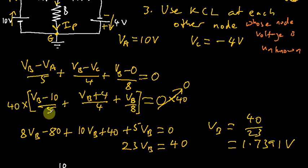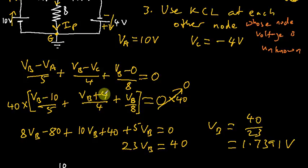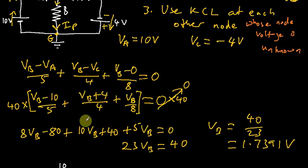On the left-hand side, 5 goes into 40 giving us 8, so we have 8VB minus 8 times 10, which is minus 80. Then 4 goes into 40 ten times, so 10 times VB gives us 10VB plus 4 times 10 which is 40. And 8 goes into 40 five times, so we're left with 5VB. That's equal to 0. So that gives us 8 plus 10 plus 5 — that is 23VB.